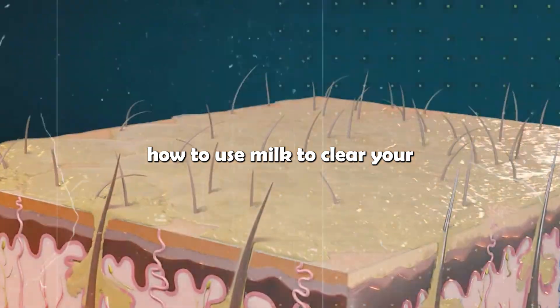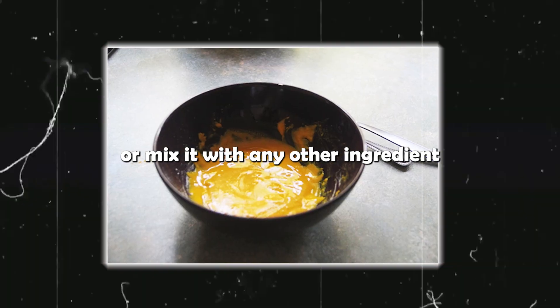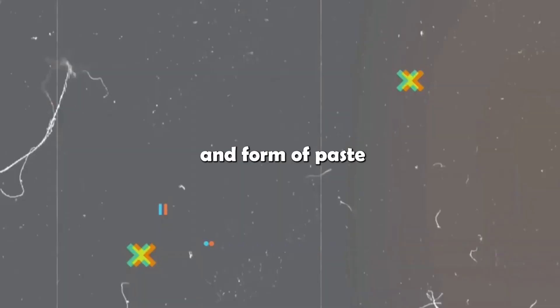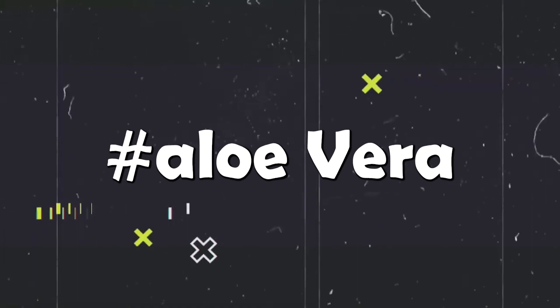How to use milk to clear your dry, oily, pimpled skin. You can apply raw milk to your skin or mix it with any other ingredient and form a paste. Slap it onto your face for a few minutes and then wash it off. Aloe vera.